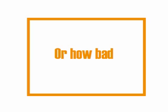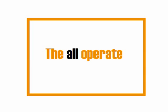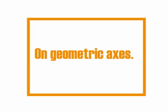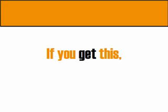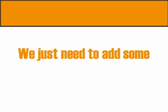No matter how big, how powerful, or how sophisticated the machine, they're all the same — all constrained to geometric axes. As you get further along in your training, you'll hear about additional axes: the A axis, the B axis. State-of-the-art machinery runs up to seven axes. But it doesn't matter — all of those axes are simply constrained along geometric progressions. If you understand this concept, you get manufacturing math.